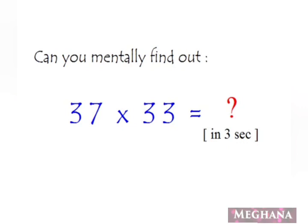Dear students, today we are going to learn something very interesting, something magical. We are going to learn how to multiply two numbers very easily and quickly. Can you find it mentally? Here on screen you can see two numbers, 37 and 33. So I am giving you a task to multiply these two numbers in three seconds.